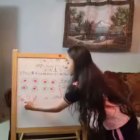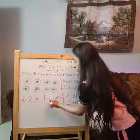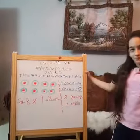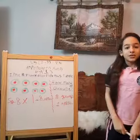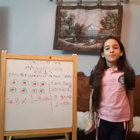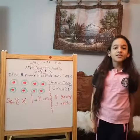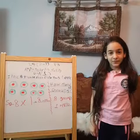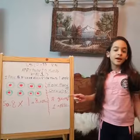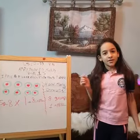Eight multiplied by one equals eight. It means any number multiplied by one, you get that exact number. Any number multiplied by one, you get exact number and you're done.